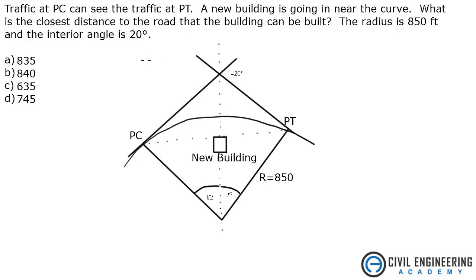The problem states traffic at PC can see the traffic at PT. Here's PC, here's PT. A new building is going in near the curve — here's the new building. What is the closest distance to the road that the building can be built? The radius is 850 feet and the interior angle is 20 degrees.